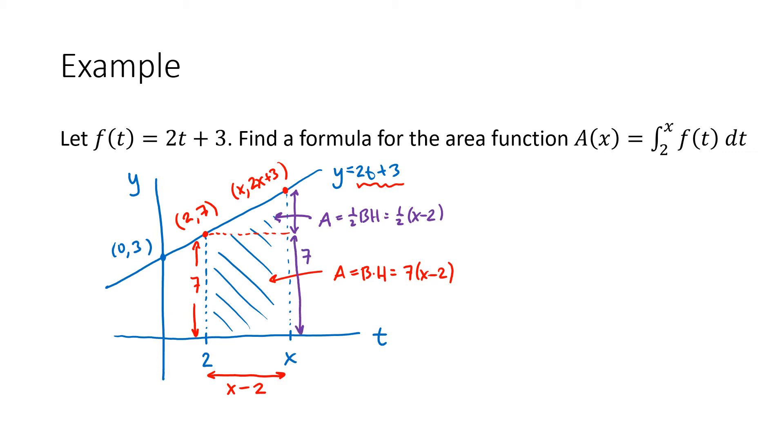Well, this vertical distance is going to be, well, this distance is 7. We saw that before. The entire distance all the way up to that point is 2x plus 3. So this distance here is 2x plus 3 minus 7. That's 2x minus 4. Right, because we went all the way up to that point from the t-axis. The distance would be 2x plus 3. We only want to go from that red horizontal dotted line that I've drawn. So we have to subtract the 7.